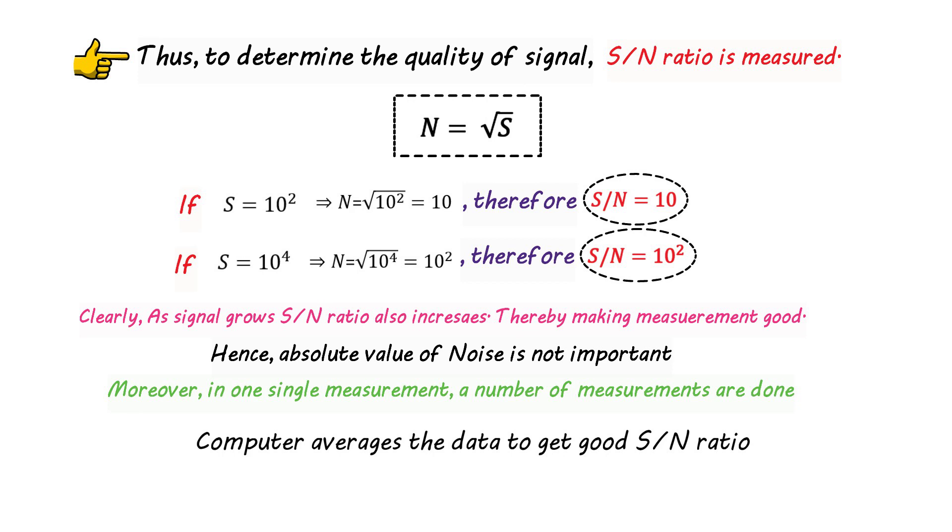If signal-to-noise ratio is 1, the height of the signal will equal the height of the noise, so you cannot identify which peak is noise and which is signal. Therefore, signal-to-noise ratio should be greater than 2.